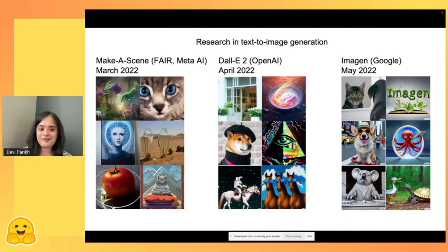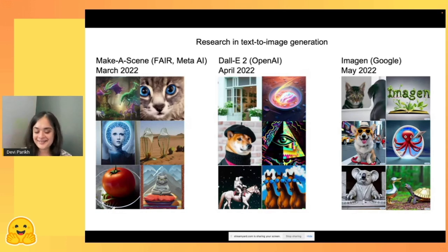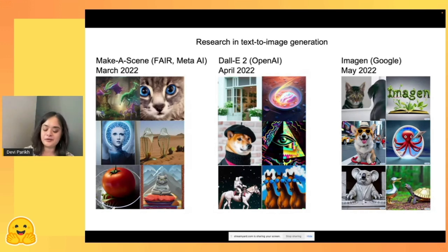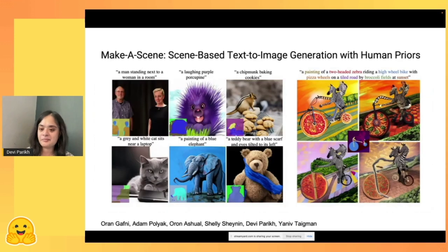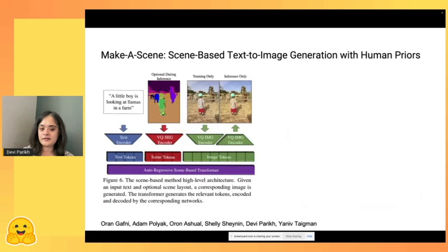Make a Scene was actually released before DALL-E 2. It was state of the art in image generation for an entirety of 10 days before DALL-E 2 happened. Then there was a whole sequence of Imagen, Parti, and many other models — more recently stable diffusion and others. Here's a glimpse of some images Make a Scene could generate, showing sketches alongside fantastical compositions.